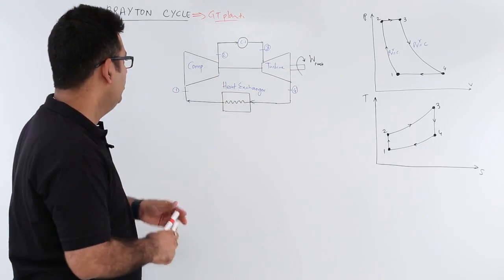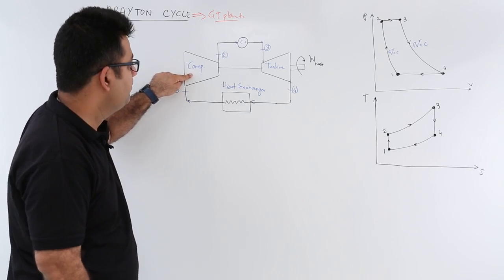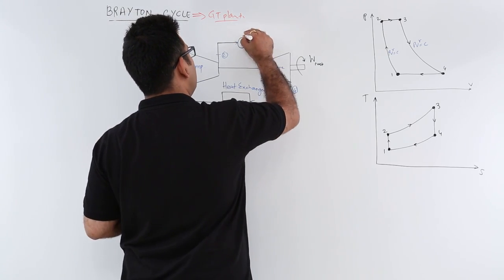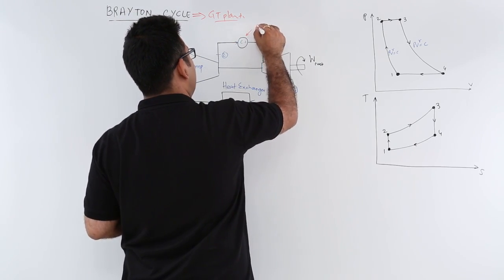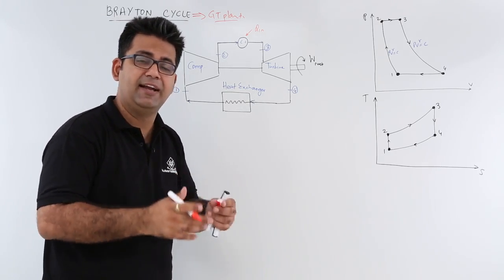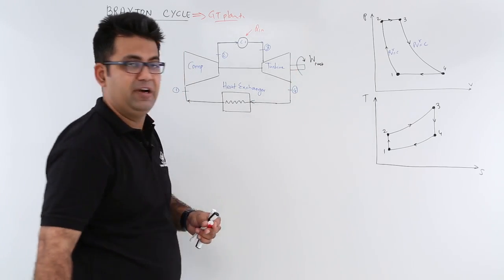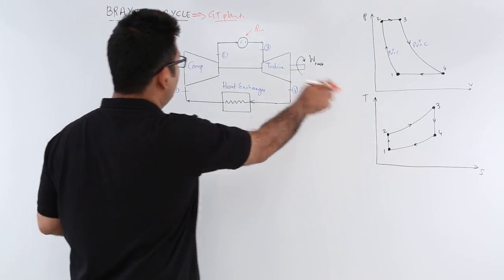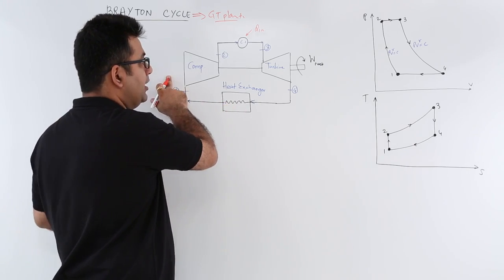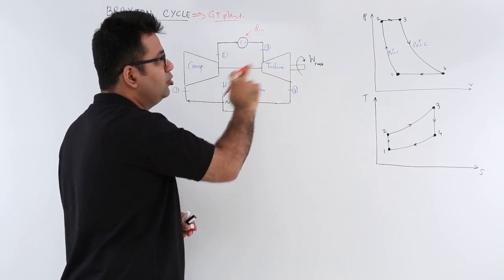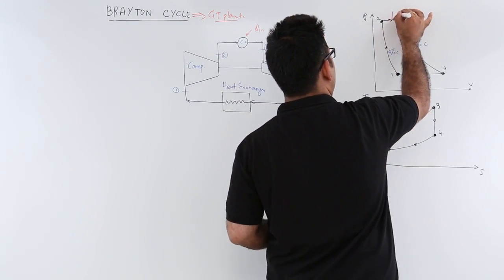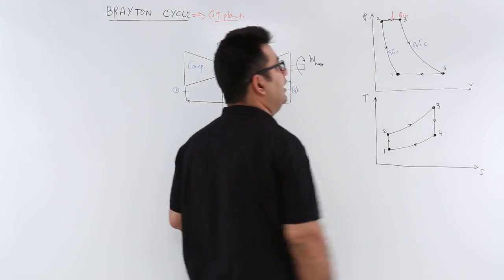The main components of a Brayton cycle are: a centrifugal compressor, then a combustion chamber. In this combustion chamber, heat is added at constant pressure. Looking at the PV diagram, from one to two you have isentropic compression in the compressor, and then from two to three you have isobaric heat addition in the combustion chamber — this is where the heat is added.